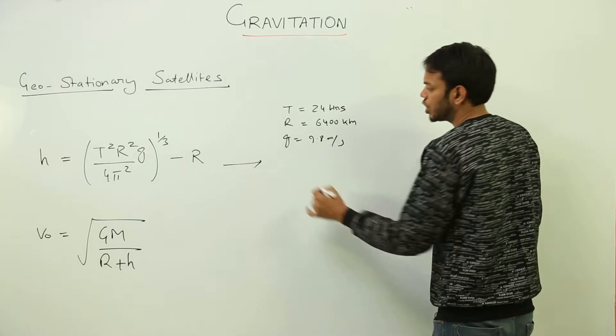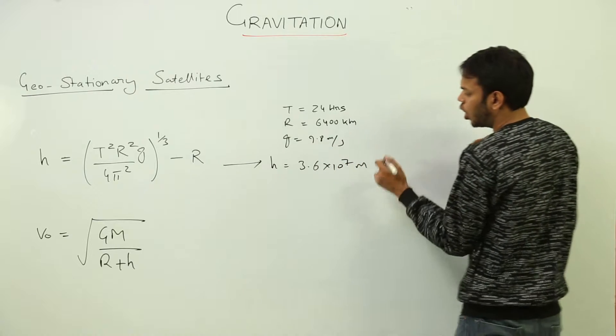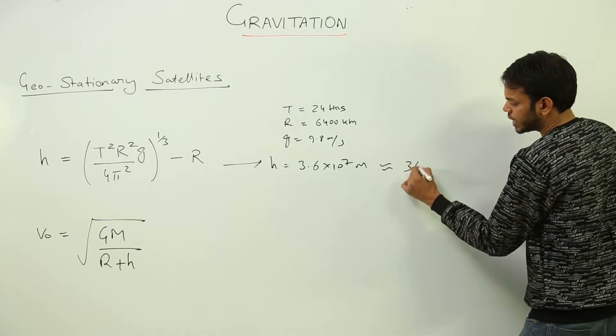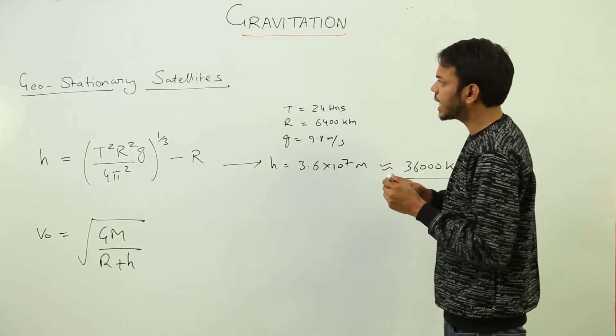value of h comes out to be 3.6 × 10^7 meters, or 36,000 kilometers. So for a satellite to be in geostationary orbit about Earth, the minimum distance has to be 36,000 kilometers.